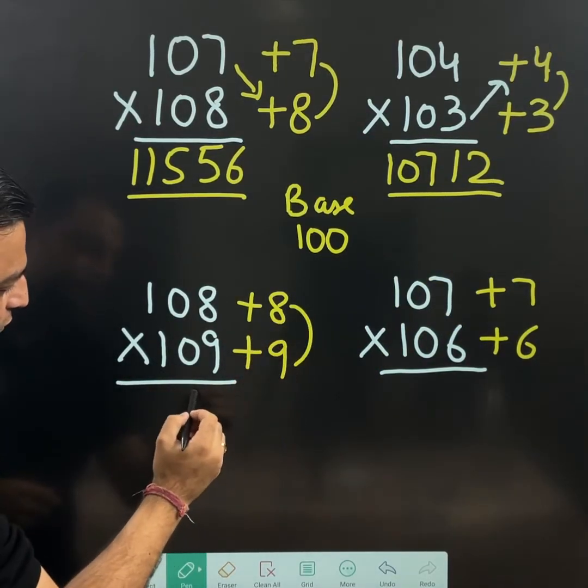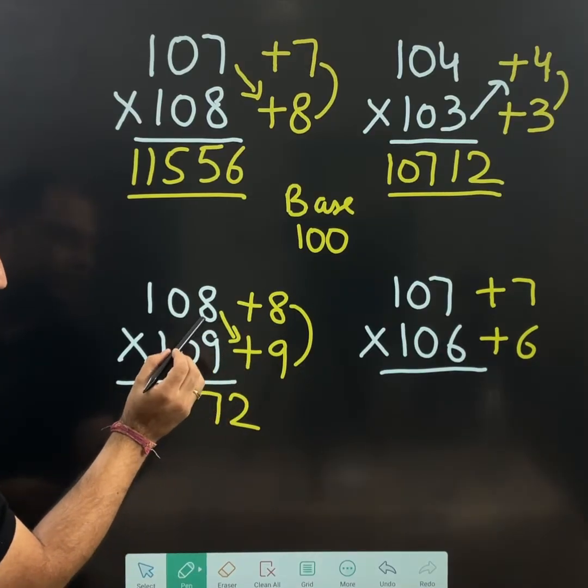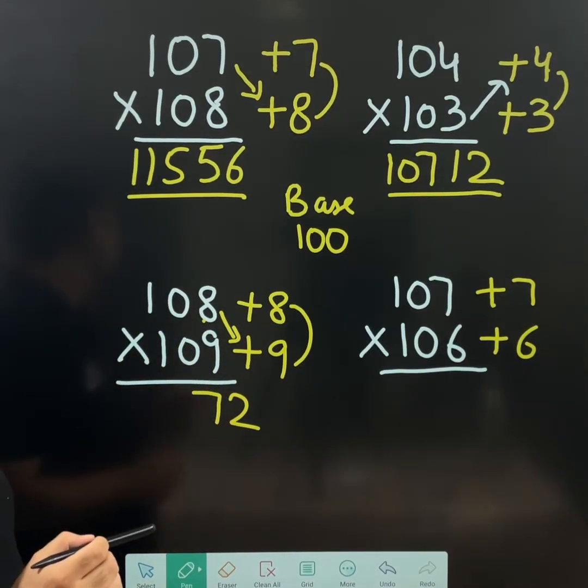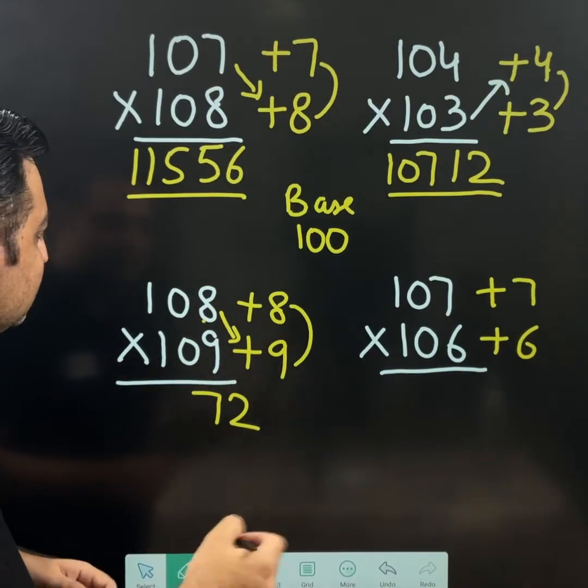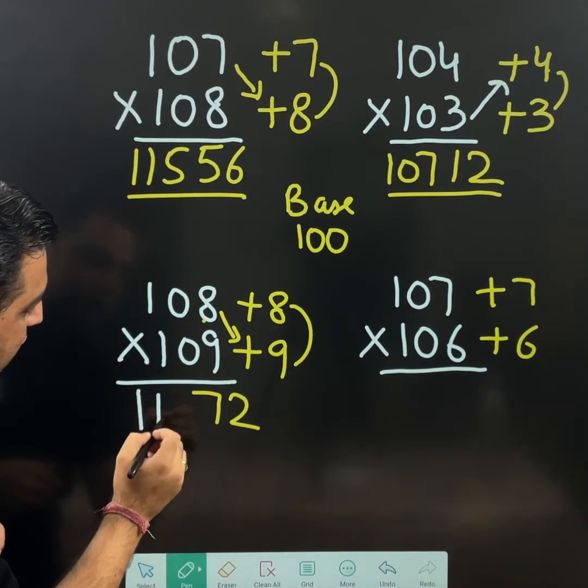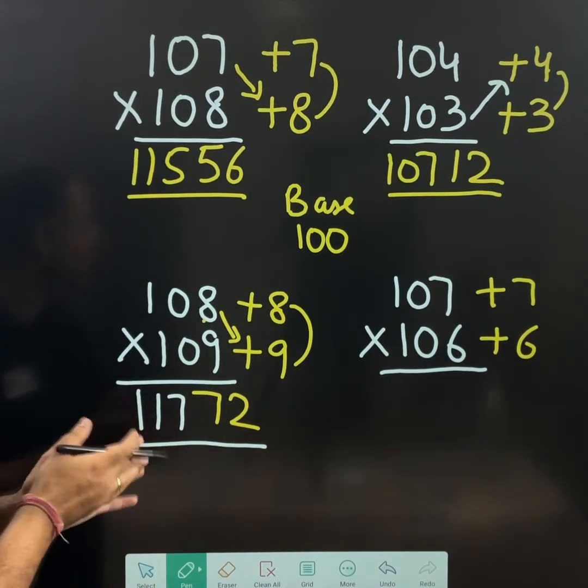Here, 8 nines are 72. And yes, 108 plus 9. 108 plus 9, if I do, I will get 117. So, this is the answer.